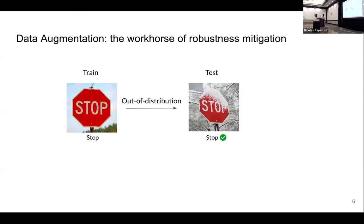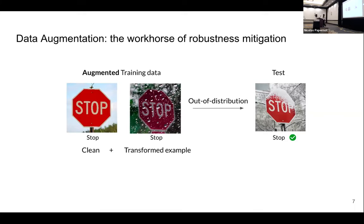One of the fundamental building blocks for improving model robustness is data augmentation. To improve out-of-distribution generalization, we augment the training data with other transformations. For example, if you want your model to be robust under snowy days, you might create images under rainy conditions. We find that with data augmentation, the model is not only more correct on distributional shifts, it also has better calibrated predictions — the confidence is more aligned with the empirical accuracy.